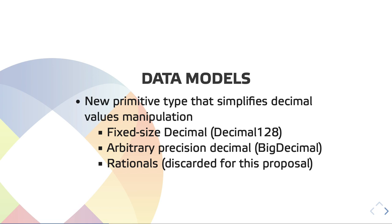We have, I would say, three main lines of thought: we might provide developers a fixed-size decimal — which would be Decimal128, a decimal represented with 128 bits. We could have arbitrary precision decimals, which we would call BigDecimal in this presentation. And also rationals — but we discarded rationals for this proposal. If you'd like to know the reasons, I would leave that for the questions.